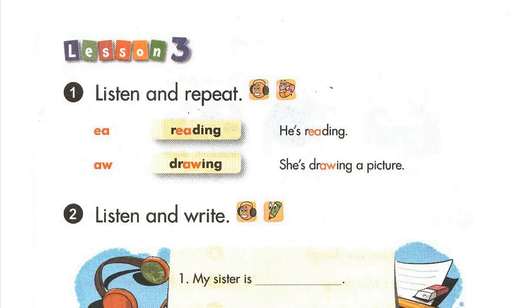Page 56. Lesson 3. Activity 1. Listen and repeat. Reading. He's reading. Drawing. She's drawing a picture.